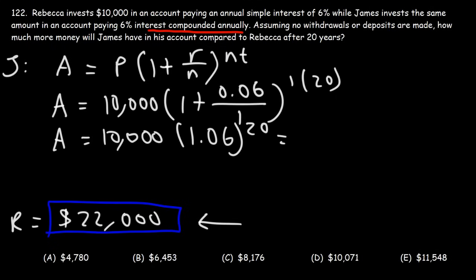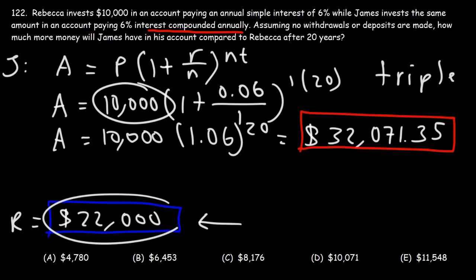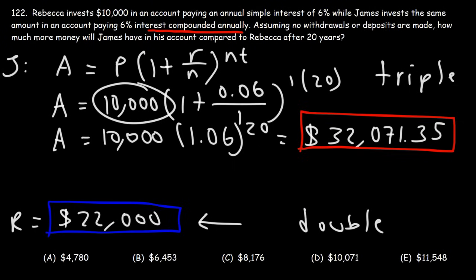So let's go ahead and plug these numbers in. $10,000 times 1.06 raised to the 20th power is going to equal $32,071.35. Due to the effect of compounding, James was able to triple his money in a 20-year period, whereas Rebecca was only able to double her money. The difference between $32,000 and $22,000 is approximately $10,000, so answer choice D is the right answer.